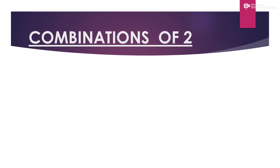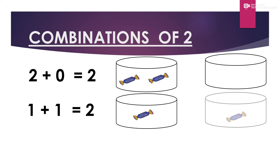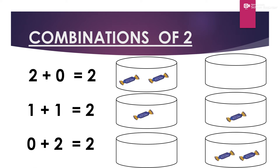There are three ways to make the combinations of 2. 2 and 0 makes 2. 1 and 1 makes 2. 0 and 2 makes 2.